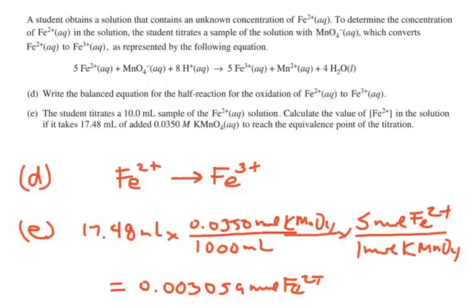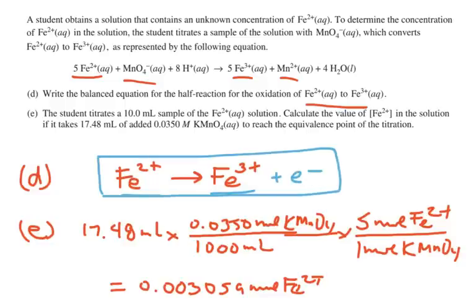A student obtains a solution that contains an unknown concentration of Fe2+ ion. To determine the concentration of the Fe2+ in the solution, the student titrates a sample with MnO4-, which converts the Fe2+ to Fe3+. Write a balanced equation for the half reaction of the Fe2+ going to the Fe3+. So we have Fe2+, Fe3+. All we need is some electrons. Which side is more positive? The one on the right. How much more positive? By one. So we're going to add one electron on the right, and that gives us our complete answer. That's worth one point.